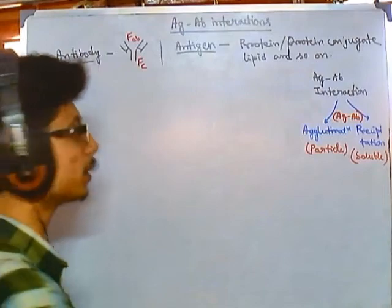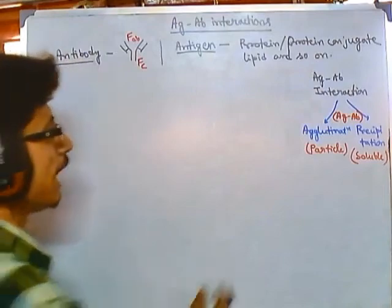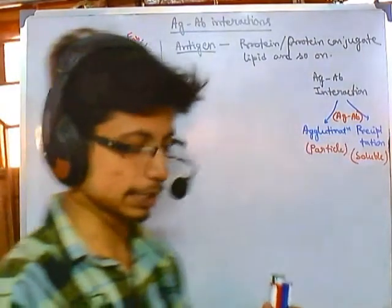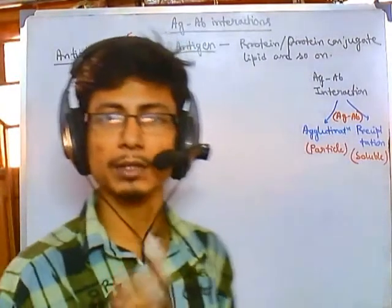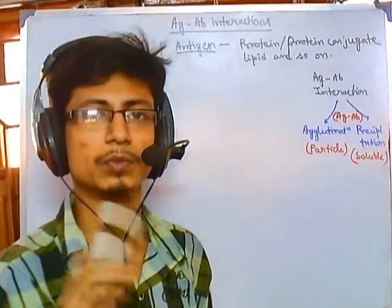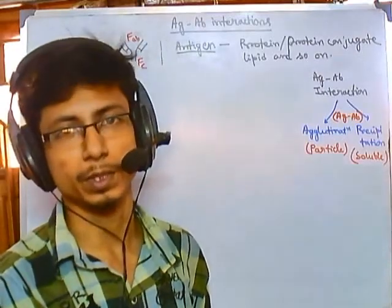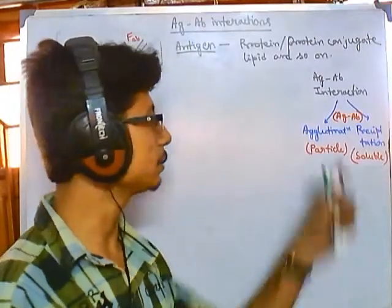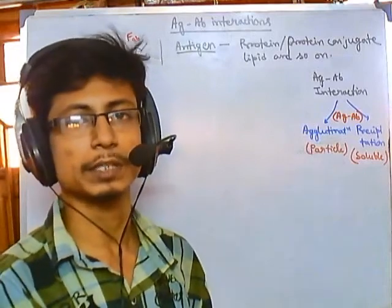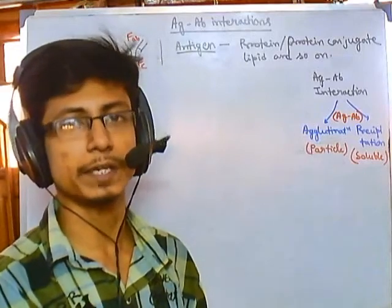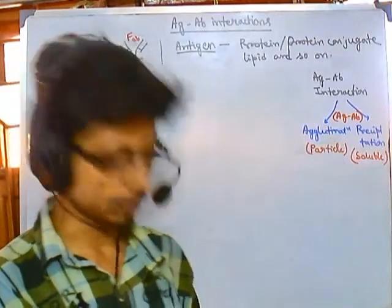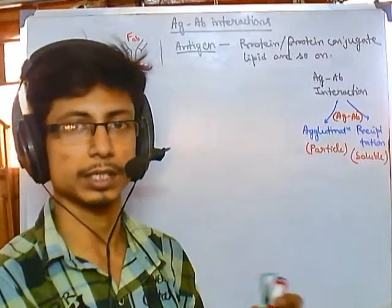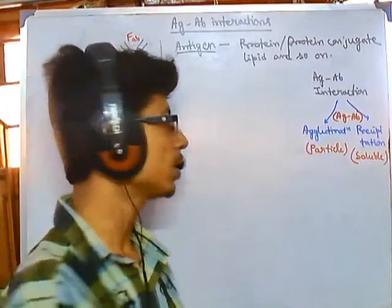We will be talking about agglutination mainly, because we can utilize agglutination as a tool for detecting the blood group of humans, as well as we can use agglutination as a tool for detecting whether there is an infection caused by a type of bacteria inside our body or inside our blood.